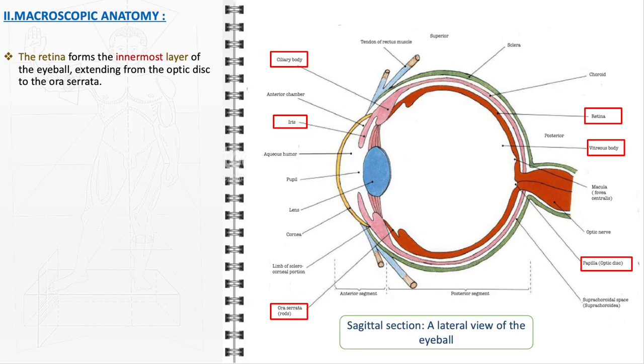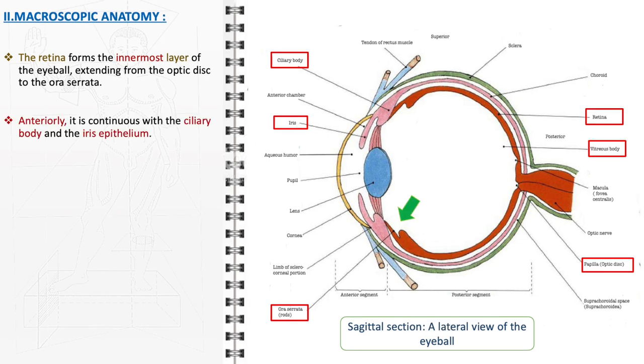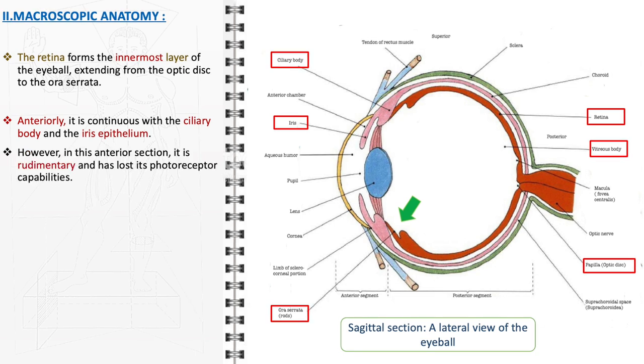Beginning with an exploration of the macroscopic anatomy of the retina, this crucial structure forms the innermost layer of the eyeball, extending from the optic disc to the ora serrata. Anteriorly, it seamlessly connects with the ciliary body and the iris epithelium. In this anterior region, the retina's structure is rudimentary, having lost its photoreceptor functionality.